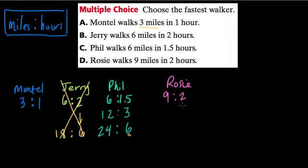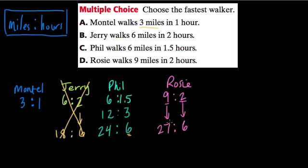Three more to go. What about Rosie? If we triple Rosie's ratio to reach six hours — every two hours she goes nine miles, so for six hours she goes nine times three, or 27 miles. So Rosie is walking more than Phil in the same time.